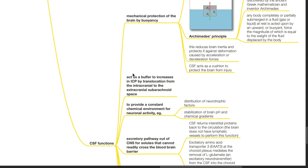Secondly, CSF acts as a buffer to increases in ICP by translocation from the intracranial to the extracranial subarachnoid space.